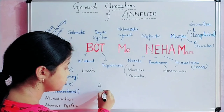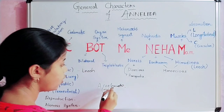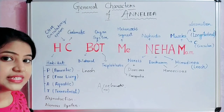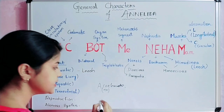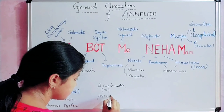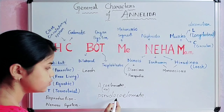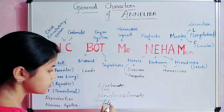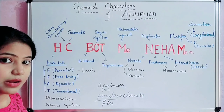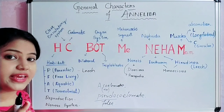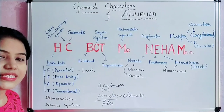After Coelenterata, in Platyhelminthes, the body cavity is false — that is Pseudocoelomate. False coelom is present in Aschelminthes. But after Aschelminthes comes Annelida, where the body cavity is true. True coelom is present, that is why it is called Coelomate.